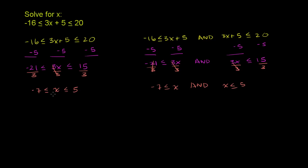We've solved for x and given the solution set. If we want to graph it on a number line, with 0 in the middle, 5 to the right, and negative 7 to the left, our solution set includes everything between negative 7 and 5, including negative 7 and 5 themselves. So we fill in the circles on negative 7 and positive 5, and shade everything in between.